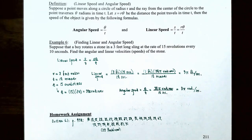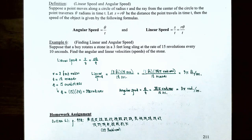This finishes our video on angle measure. We talked about how to draw angles in standard position, how to convert between degrees and radians, how to find coterminal angles, how to find the length of a circular arc and the area of a circular sector, and linear and angular speed to describe motion along a circular path. If you have any questions about any examples in this video or the homework, please let me know, and I'll see you in the next video on trigonometry of right triangles.